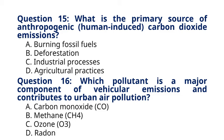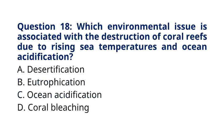Question 17. Which environmental issue is associated with the destruction of coral reefs due to rising sea temperatures and ocean acidification? A. Desertification. B. Eutrophication. C. Ocean acidification. D. Coral bleaching. The correct answer to question 17 is option D. Coral bleaching. Explanation: coral bleaching is a phenomenon caused by the expulsion of symbiotic algae from coral tissues due to stressors such as rising sea temperatures and ocean acidification, leading to the destruction of coral reefs.